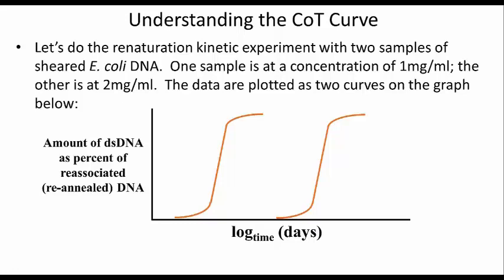What you're looking at is a renaturation kinetic experiment on two samples of sheared E. coli DNA. One sample started at a concentration of one milligram per mil, and the other started at two milligrams per mil, and you get two curves as shown on the graph. So the question is, which of these two curves is the data from the two milligram per mil sample, and which is from the one milligram per mil sample?